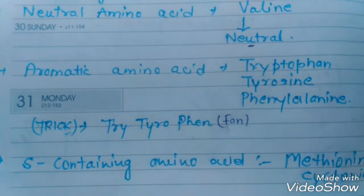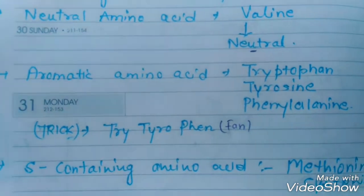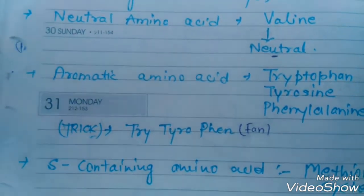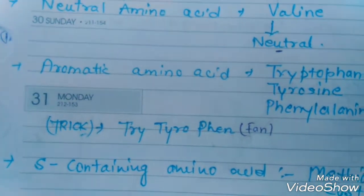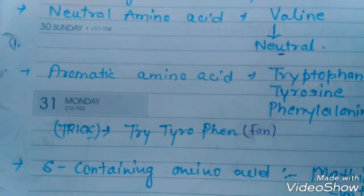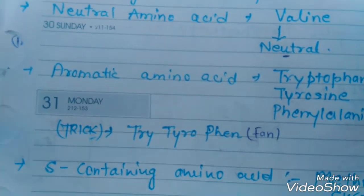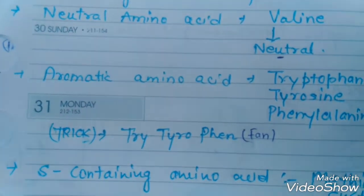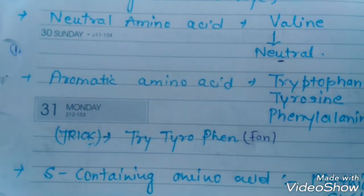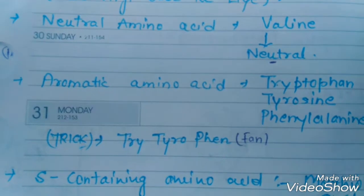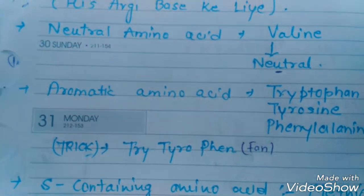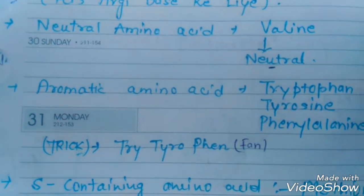Sulfur-containing amino acids include cysteine and methionine. I hope you can now remember acidic, basic, neutral, and aromatic amino acids. If this video helped you, please click the thumbs up, give a rating, and you can also buy books with these types of tricks — I've linked them in the description.